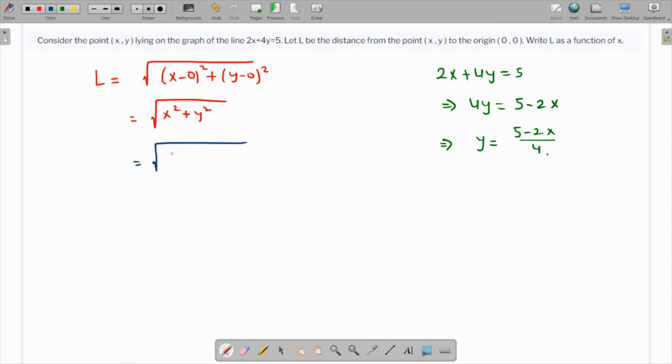So we get x² + ((5 - 2x)/4)². This is going to be the square root of x² + (25 + 4x² - 20x)/16, when we open up the parentheses.